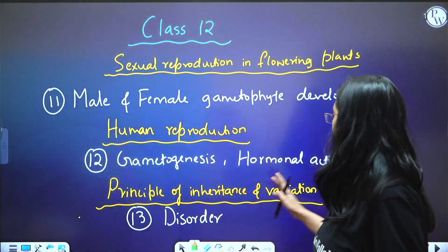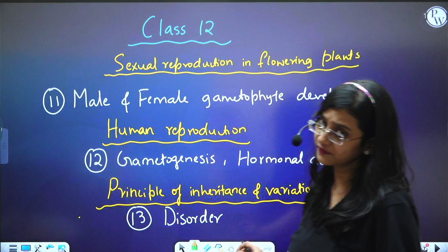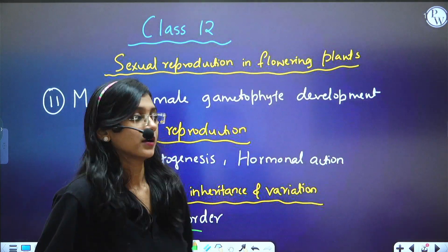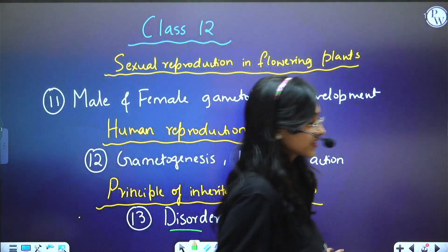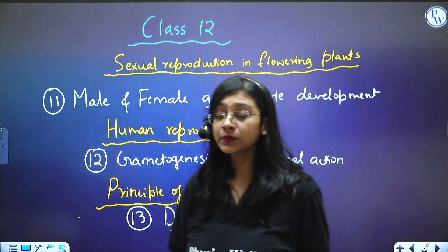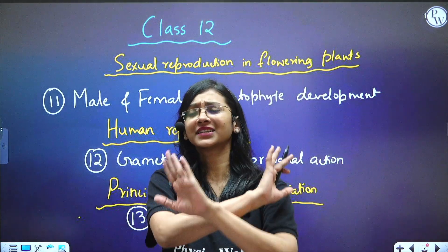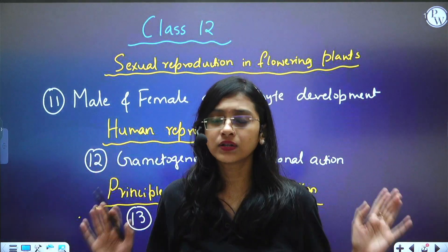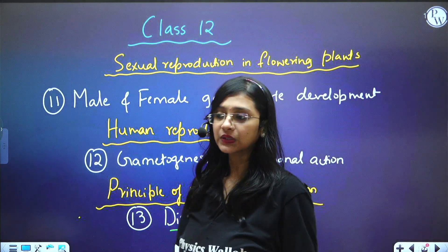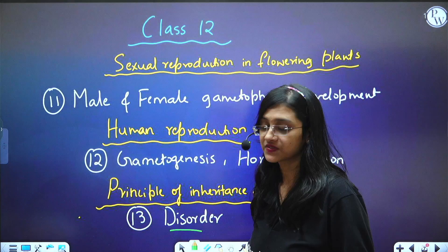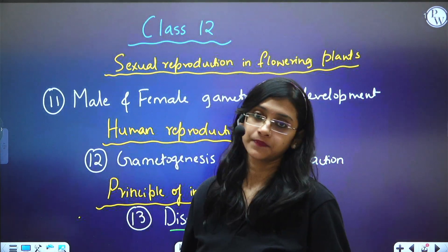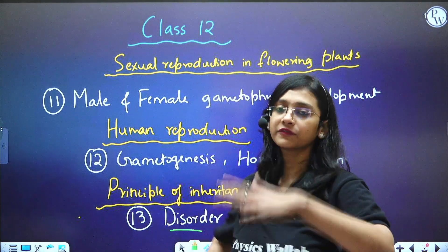From Principles of Inheritance and Variation, a high-weightage chapter, you must know all the disorders. Disorders are present across all class 11th and 12th biology chapters, so disorders in general are very important. Under this chapter specifically, you need to know genetic disorders — both chromosomal disorders and disorders related to genes, including point mutations.